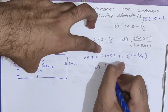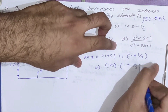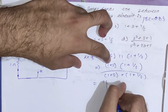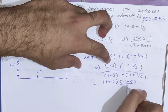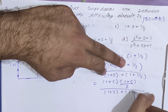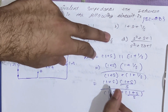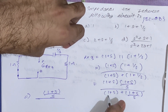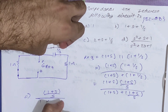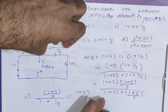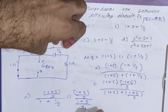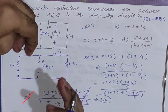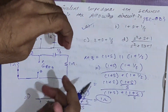The equivalent Zth is (1 + s) in parallel with (1 + 1/s). Using the parallel formula: [(1+s)·(1 + 1/s)] / [(1+s) + (1 + 1/s)] = [(1+s)(1+s)/s] / [(2 + s + 1/s)] = [(1+s)²/s] / [(1+s)²/s] after simplification, yielding 1 ohm. So the correct option is A. Following these three conditions, you can solve all such problems very easily and quickly.